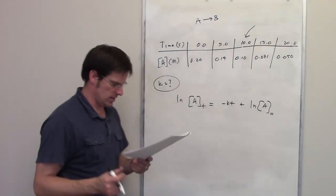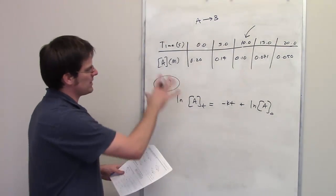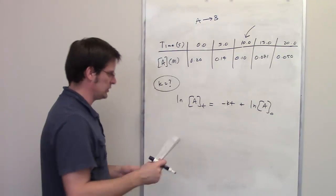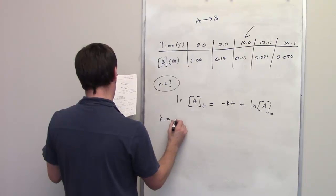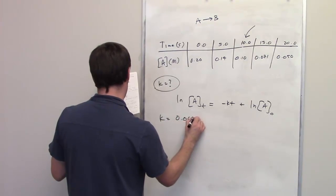All right, now we move on to another question. We're dealing with the same data that we had from a previous question, in which we should have determined that k was equal to 0.069.